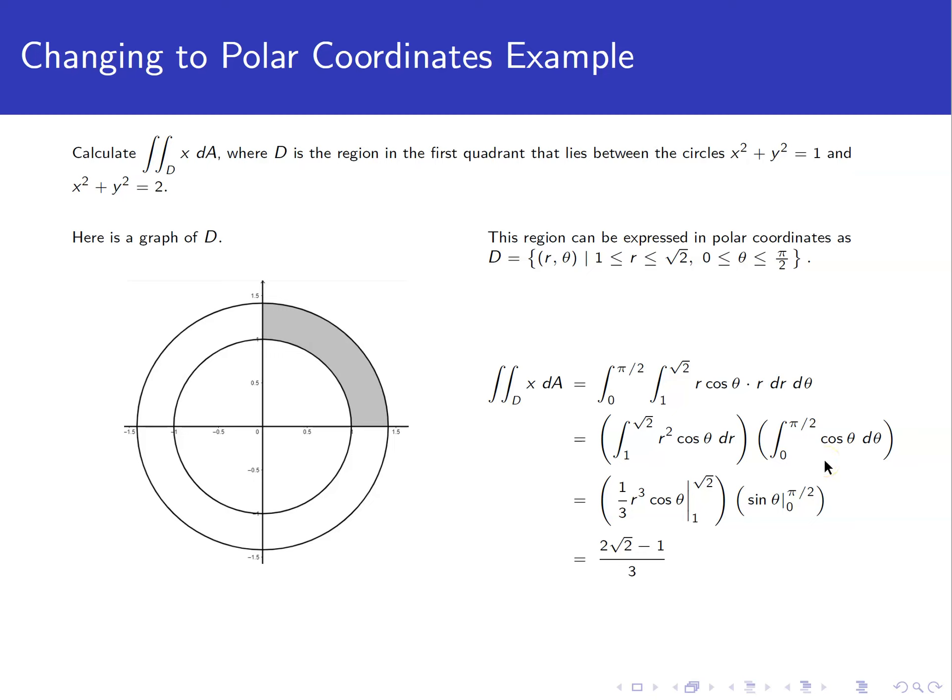except that there should not be a cosine theta in this piece. This should just be r squared. This is a typo. The cosine theta does not belong here, it belongs in the other integral. My apologies for that. If you're writing this down, just delete that from the notes. This would just be r squared dr and then cosine theta d theta over here.